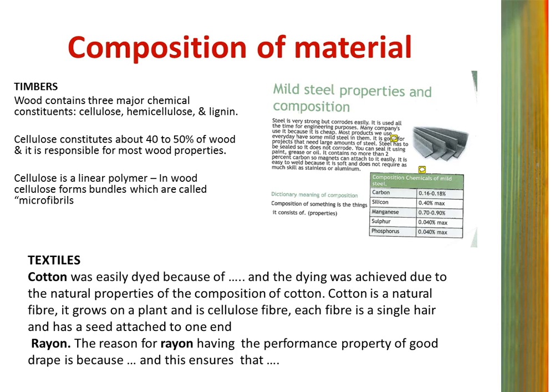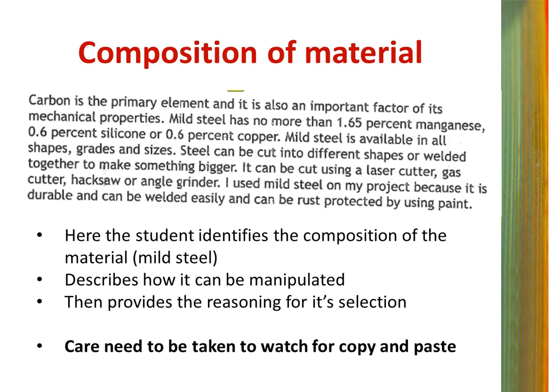Rayon — the reason for rayon having the performance property of good drape is because of its composition and structure. Here, the student identifies the composition of the materials, which is mild steel, describes how it can be manipulated, then provides the reasoning for its selection. Care needs to be taken to watch for students undertaking a copy and paste without the student's voice being evidenced to demonstrate their own understanding.